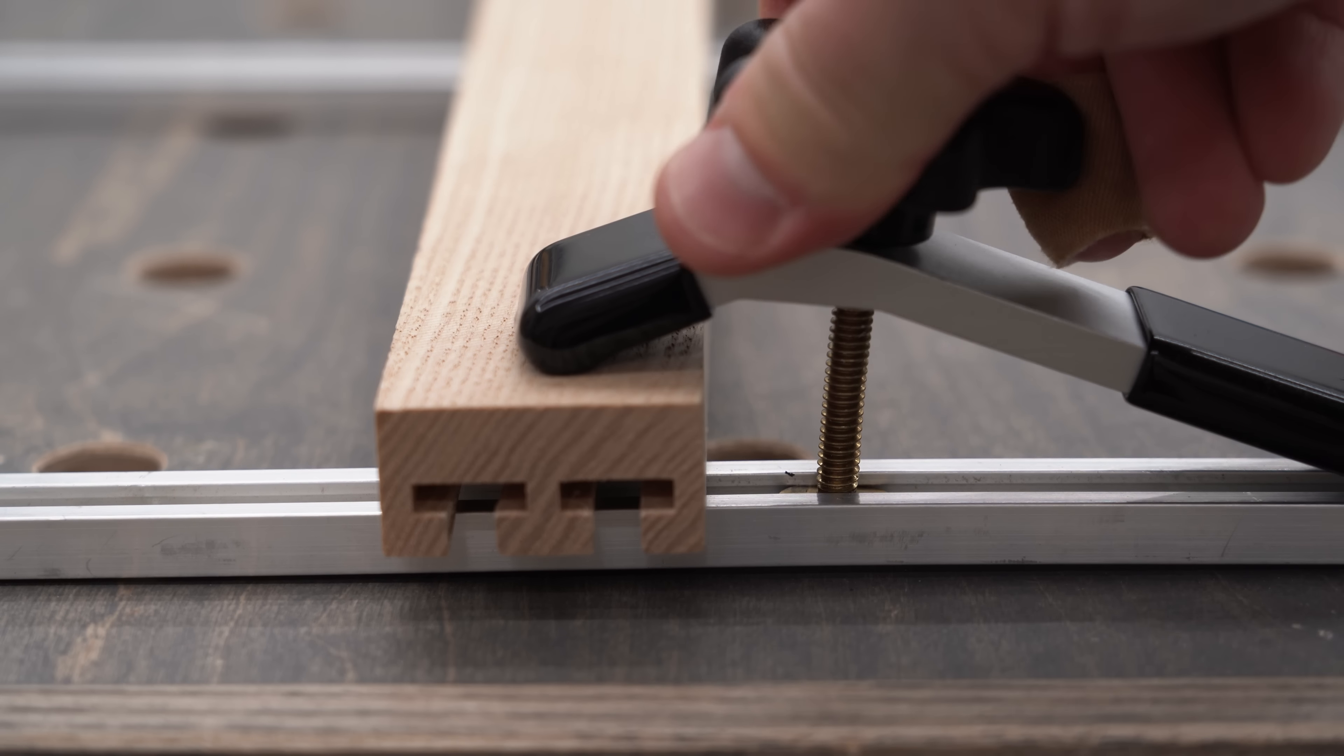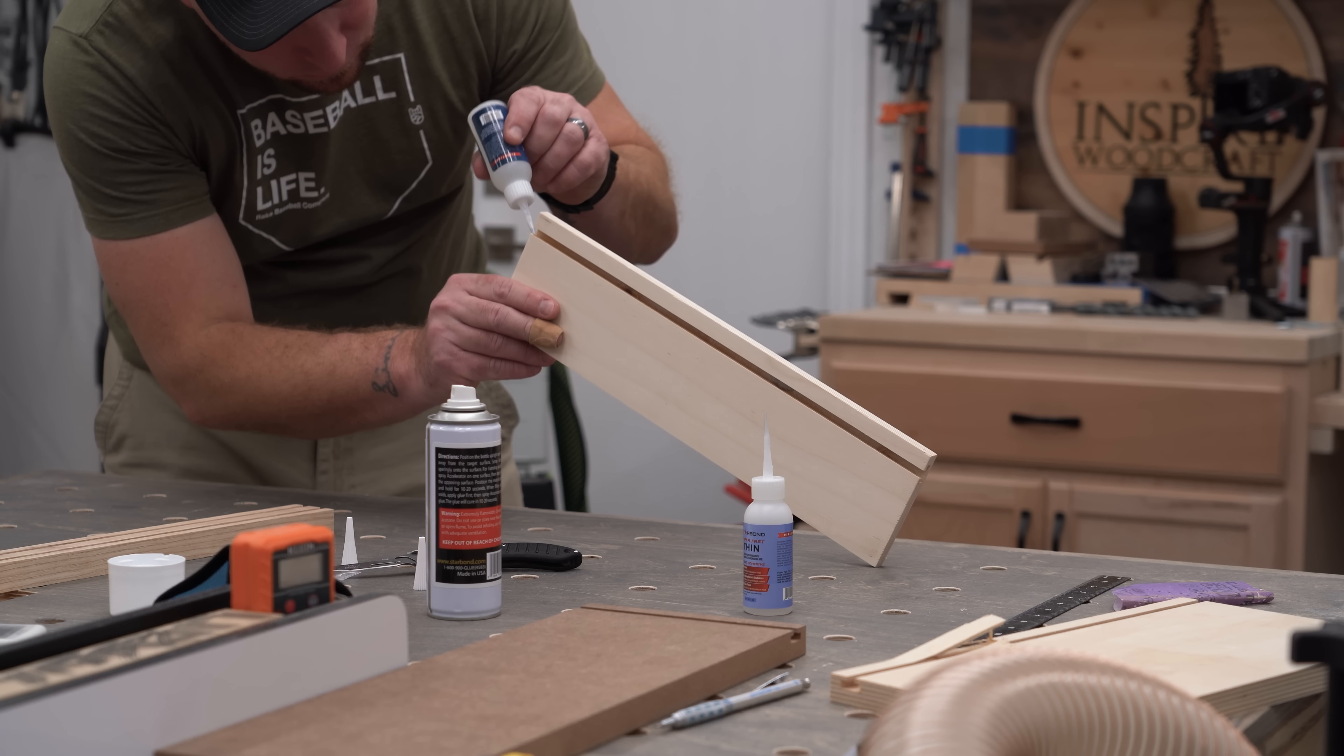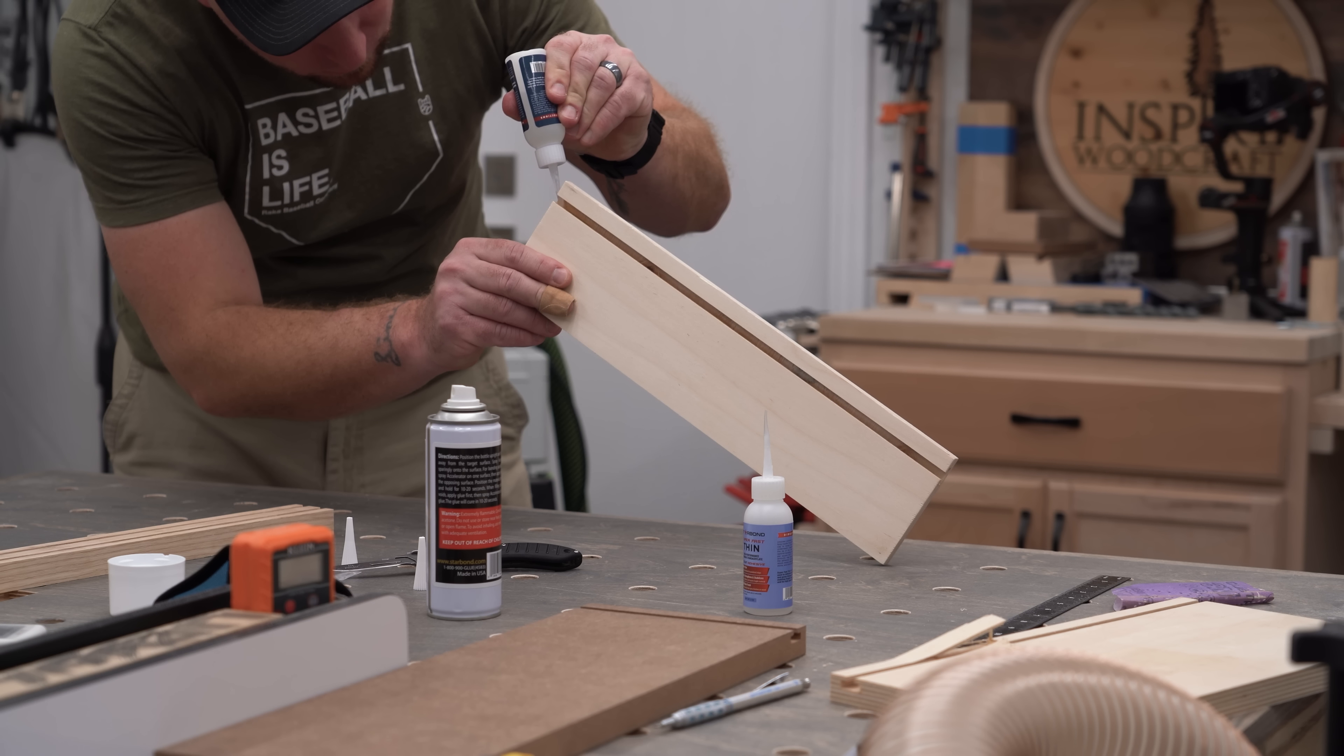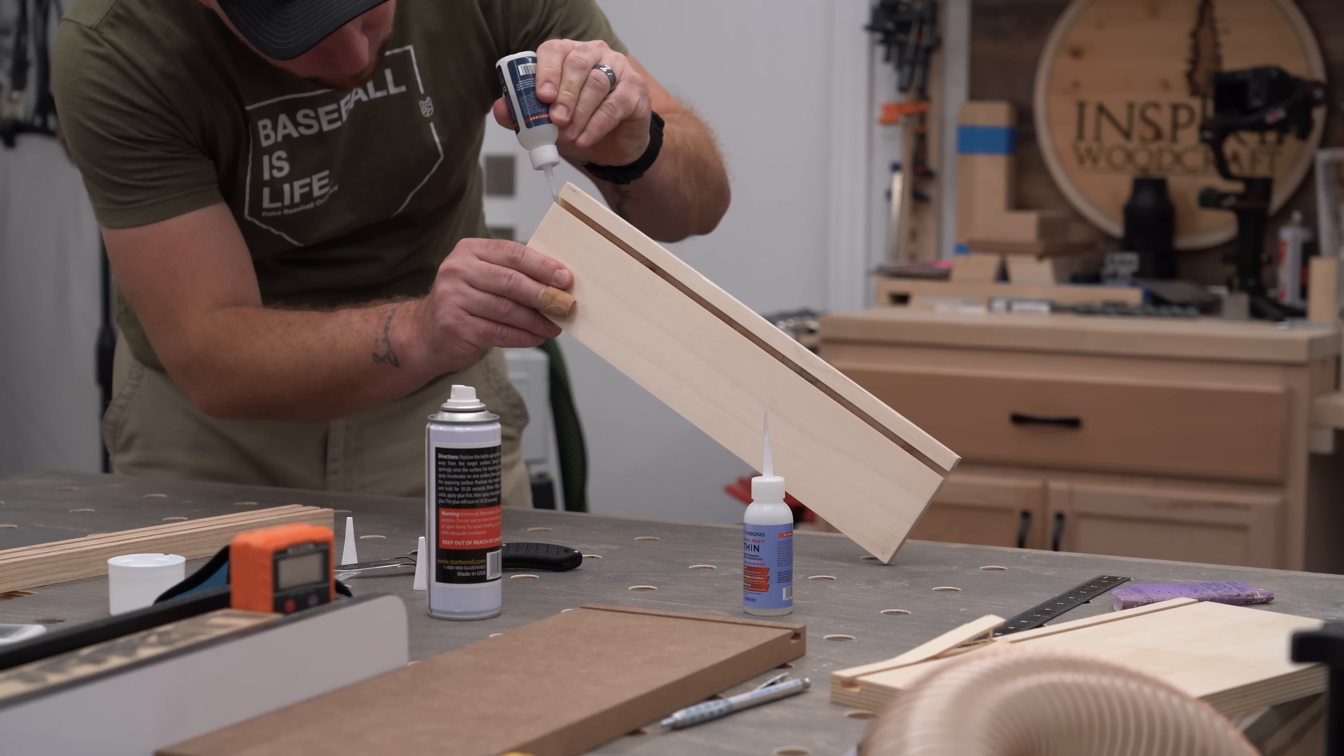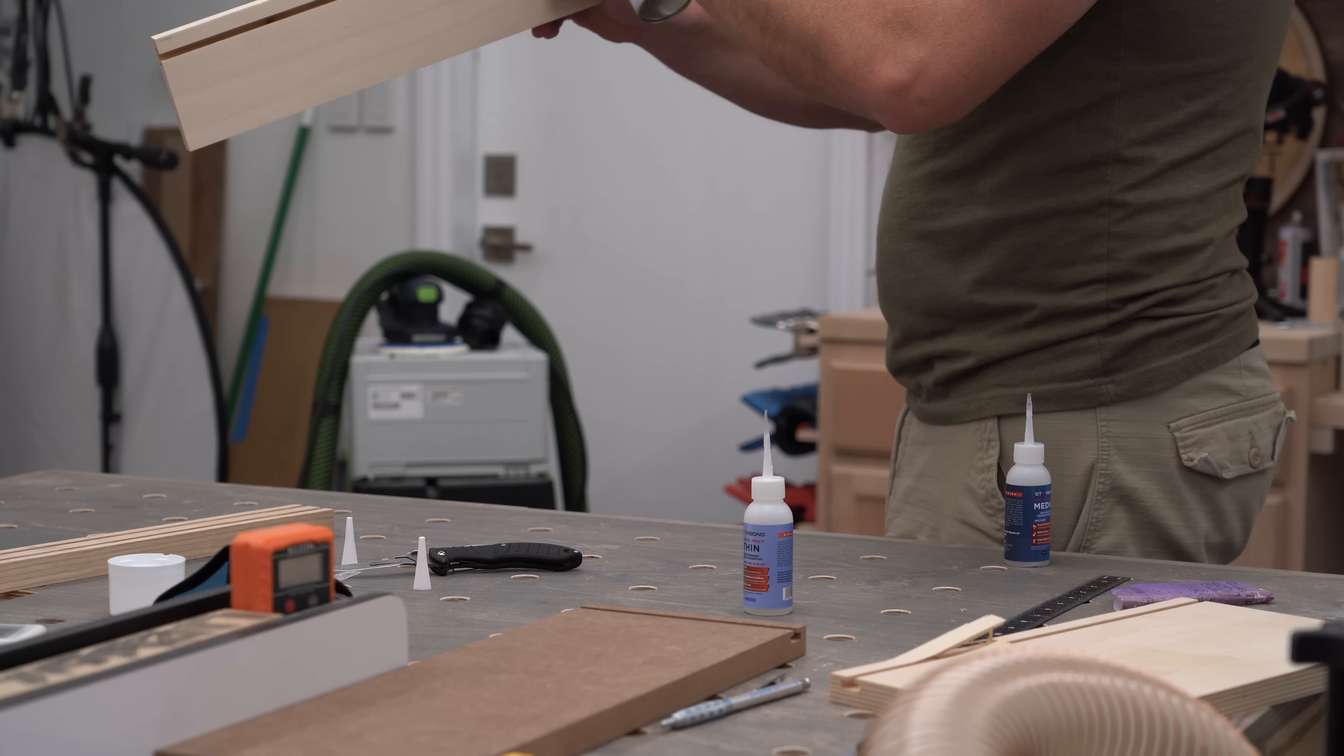One thing that can be done to strengthen wooden track is to run thin CA glue along the sides of the groove. Thin CA glue will soak into the pores of the wood and make it plastic-like. For even more protection, follow that up with a layer of medium CA. This combination will form a plastic-like layer on the inside of the slot. And while it won't make it as strong as aluminum, it's a great way to strengthen a wood track for cheap.